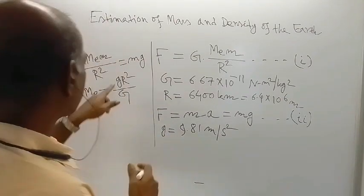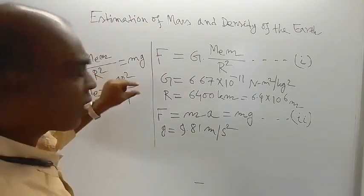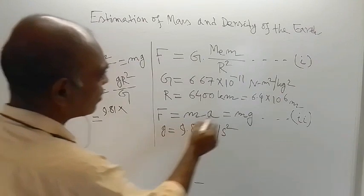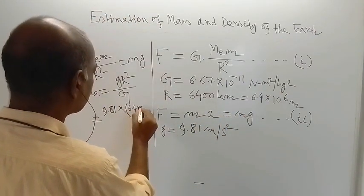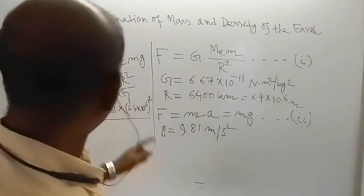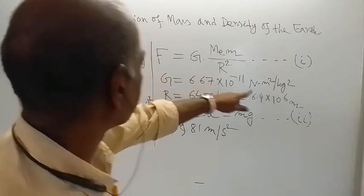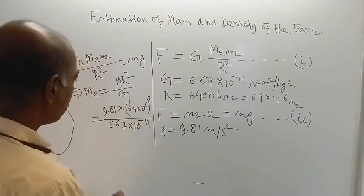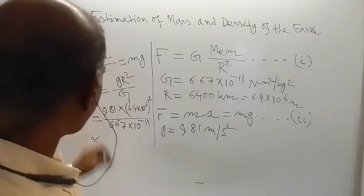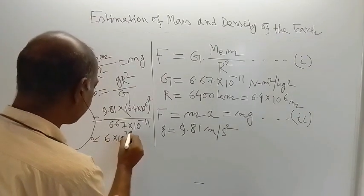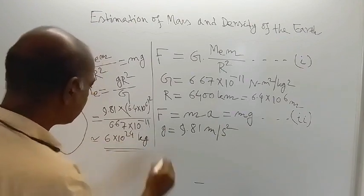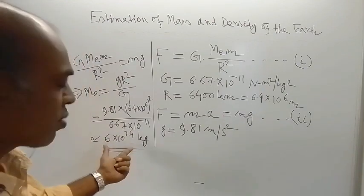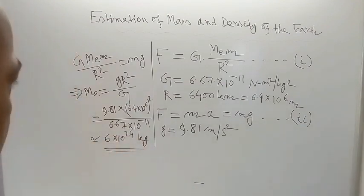Now you just substitute the values for small g, capital R, and capital G. So the values are: 9.81 for g; R is 6.4 into 10 to the power 6, so R square is the square of 6.4 into 10 to the power 6; divided by capital G which is 6.67 into 10 to the power minus 11. If you calculate this, then you will get approximately 6 into 10 to the power 24 kg. This is the estimated mass of the Earth, obtained using these values.